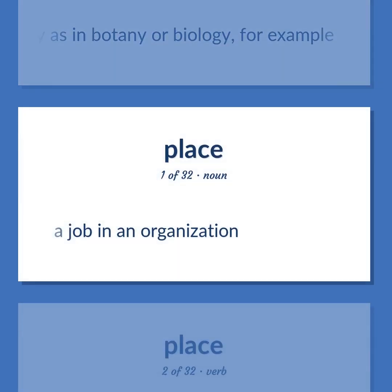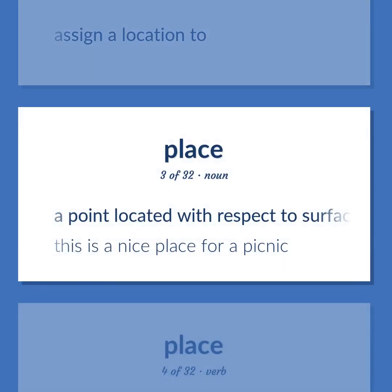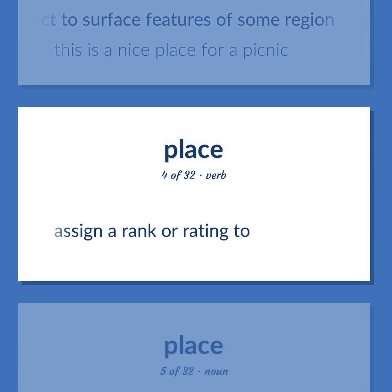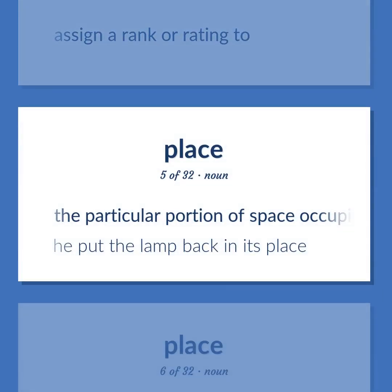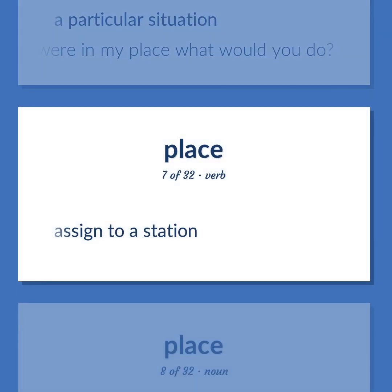Place: A job in an organization. Assign a location to. A point located with respect to surface features of some region — 'This is a nice place for a picnic.' Assign a rank or rating to. The particular portion of space occupied by something — 'He put the lamp back in its place.' A particular situation — 'If you were in my place, what would you do?' Assign to a station.